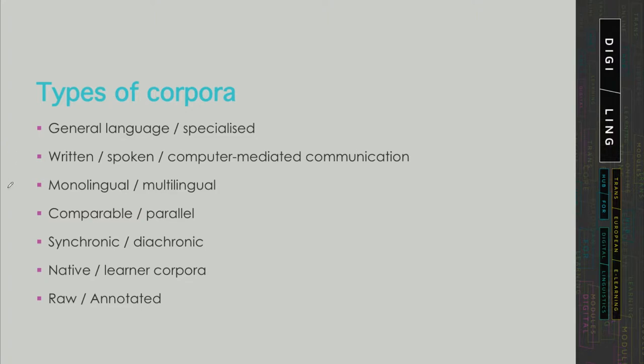Computer-mediated texts are considered to be some sort of a mixture between written and spoken discourse. Then in terms of language, we can speak of monolingual and multilingual corpora. In terms of translation status, for multilingual corpora only, we distinguish between so-called comparable corpora, which contain texts in two or more languages originally produced in those languages, but the sub-corpora in each language are comparable in some way or another.